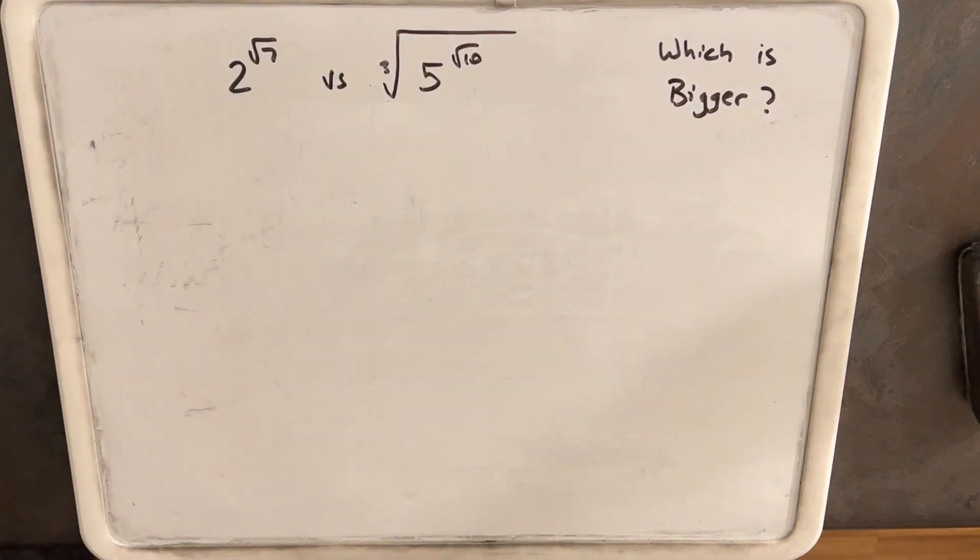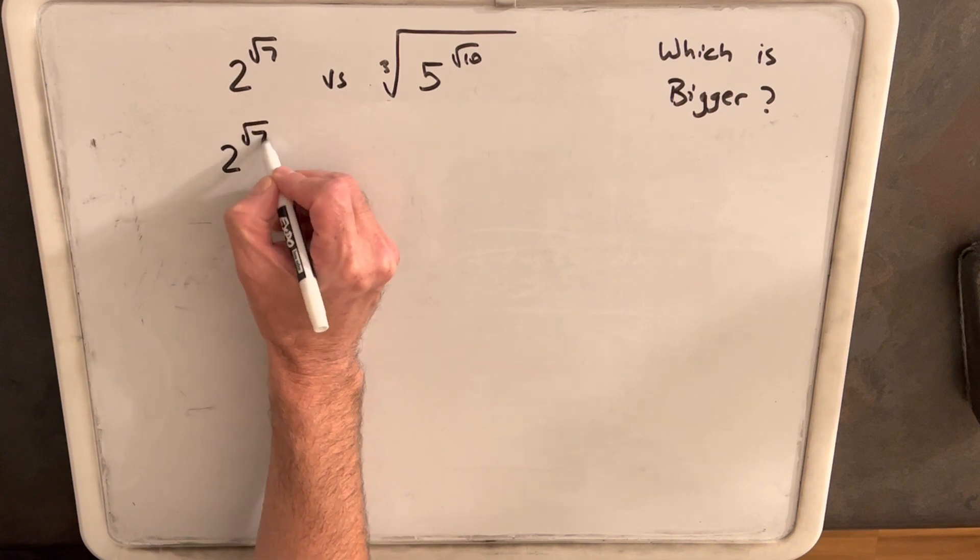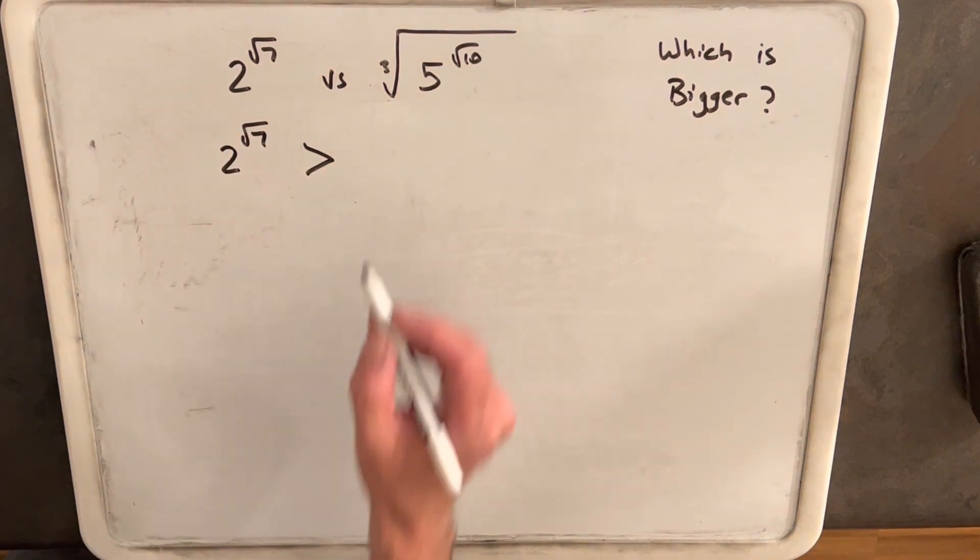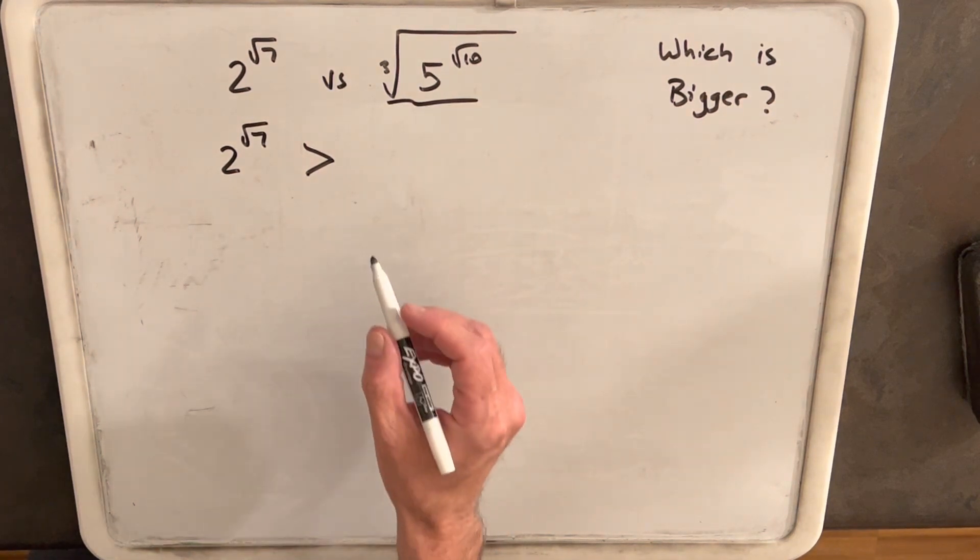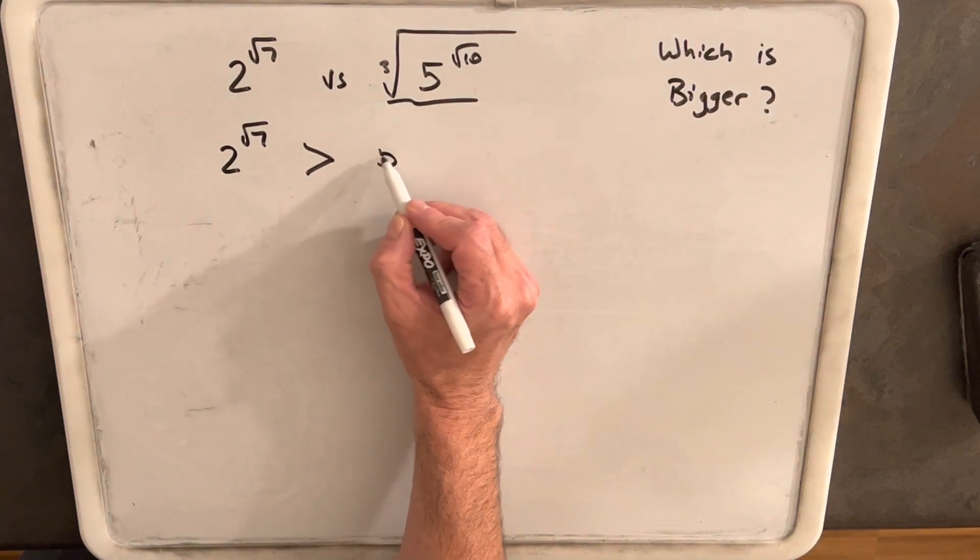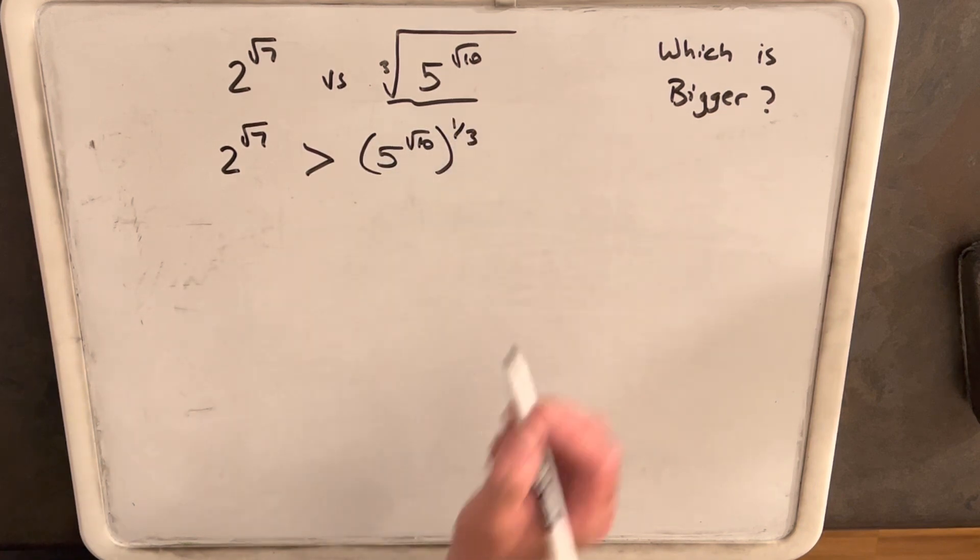So to start with, let's take a guess and we can change it later, but let's guess that 2 square root of 7 is going to be greater than. And what I'm going to do when I rewrite the expression here, I'm going to just turn this cube root into a 1 third power. So I'll write this as 5 square root of 10. And we'll write this all in parentheses with the 1 third power.